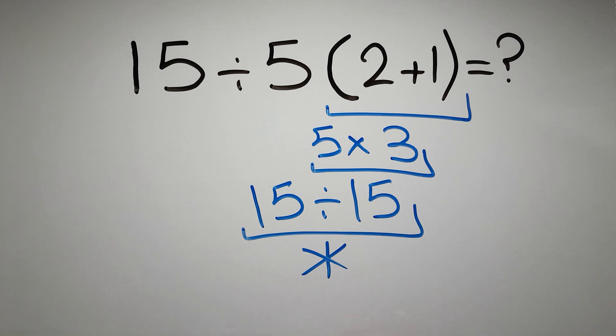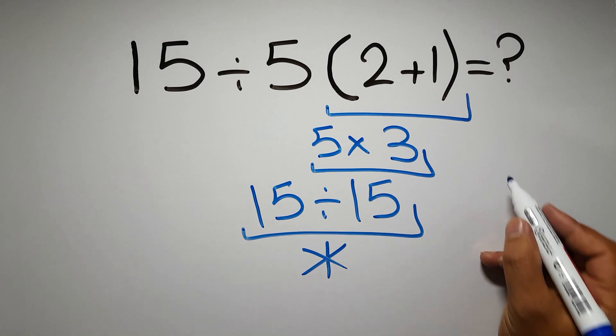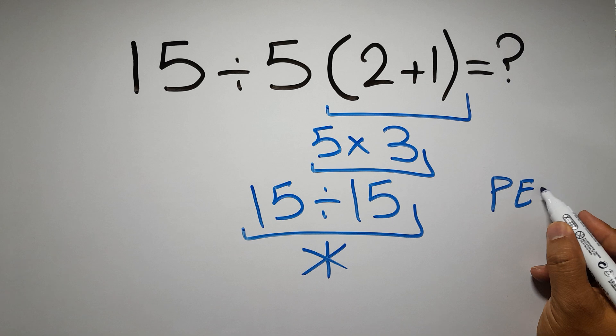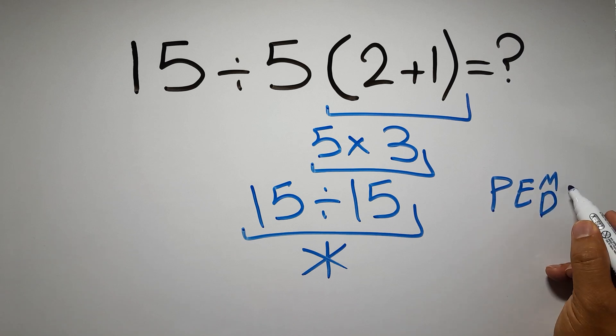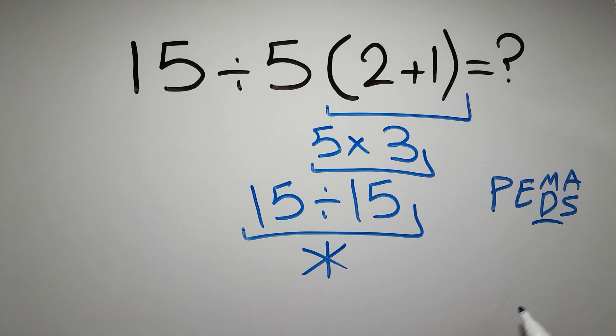Because according to the order of operations, first we have to do parentheses, then exponents, then multiplication or division, and finally addition or subtraction. Remember that multiplication and division have equal priority, and we have to work from left to right, and the same applies to addition and subtraction.